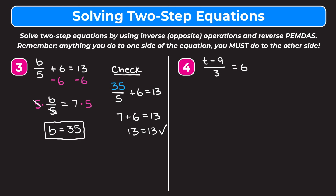Example four is: t minus 9, all divided by 3, is equal to 6. We want to think of t minus 9 as if it's in parentheses, because the entire quantity is being divided by 3. Reverse PEMDAS tells us to get rid of this 3 that's being divided first. So we multiply both sides by 3, because multiplication and division are inverse operations. On the left, the 3s cancel out, leaving t minus 9. On the right, 6 times 3 is 18.